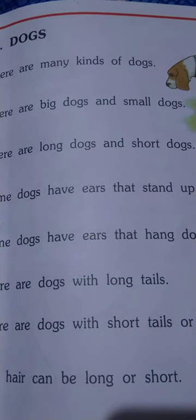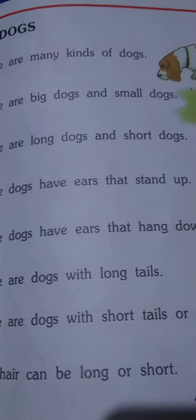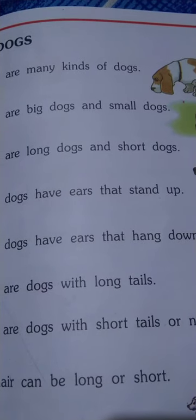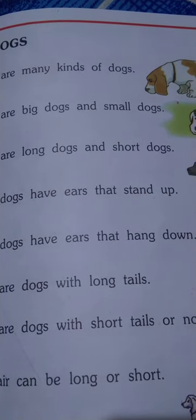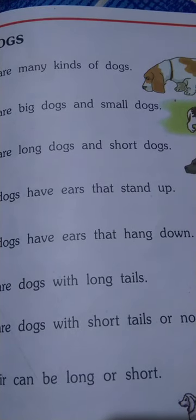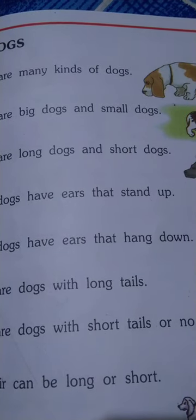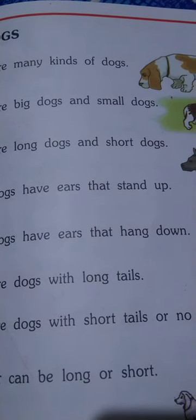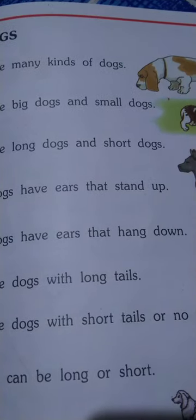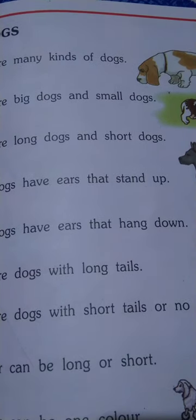What are dogs, children? Dog is a domestic animal. It has four legs, two eyes, and a tail. Dog is a very faithful animal. Dogs eat meat, bones, and biscuits. Dogs are black, white, or brown in color. Dogs live all over the world.